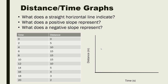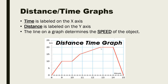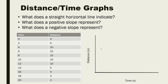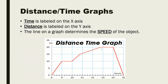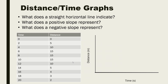Pause the video and answer the three questions about the distance-time graph. The first question asks: what does a straight horizontal line indicate? At nine seconds this object has traveled 10 kilometers, but at 10 seconds it is still at 10 kilometers. So on a distance-time graph, a flat line means the object is not changing its position.